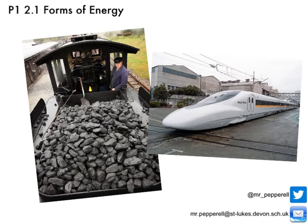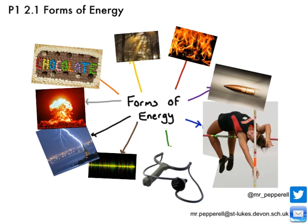Energy is a term that we hear all the time and it's used to refer to lots of different things, but energy can actually take on quite a number of different forms. All vehicles, for example, need energy. Some, like this old-fashioned steam train, carry their energy with them in the form of the fuel they've got. Others, like this more modern electric train, use electricity to transfer energy to them from the power station to keep them moving. So all energy, whether it's being stored or being transferred, is in one of what we call the forms of energy.